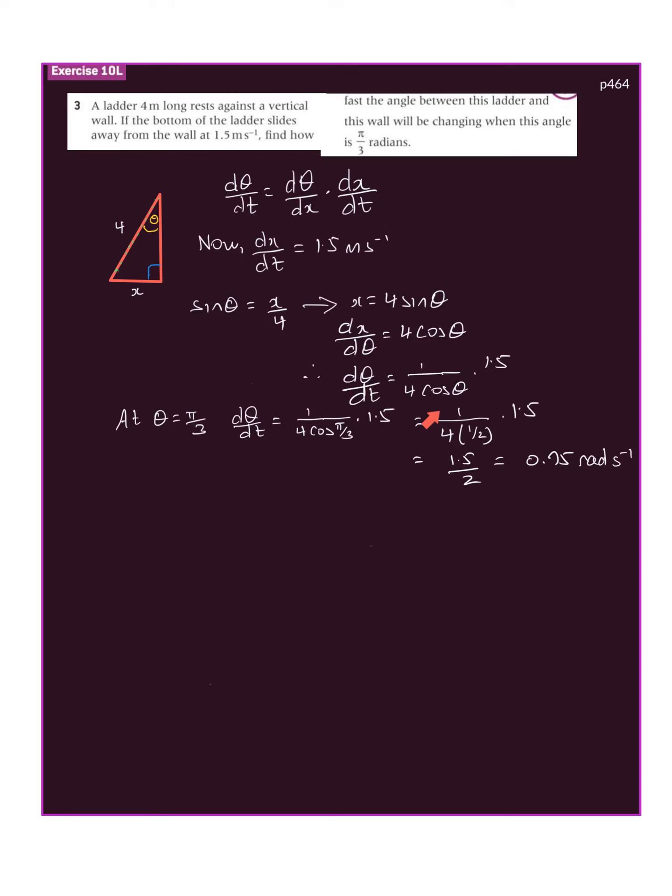That equals 1 over 4 times the cosine of—that's 60 degrees—cosine of 60 is 1/2. So 1/(4 × 1/2) × 1.5 = 0.75 radians per second. That's the rate the angle is changing.